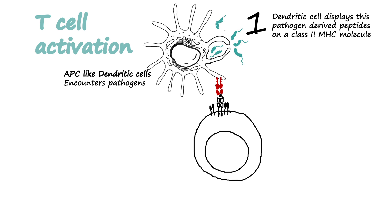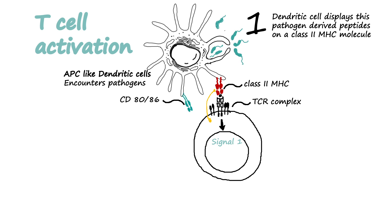The naive T cell, which has the T cell receptor, would recognize this class 2 MHC-bound peptide. So the TCR and MHC complex-mediated interaction gives rise to Signal 1 for T cell activation.